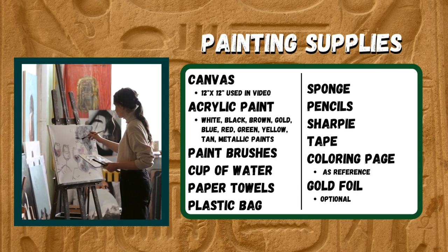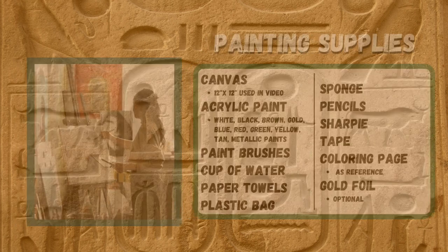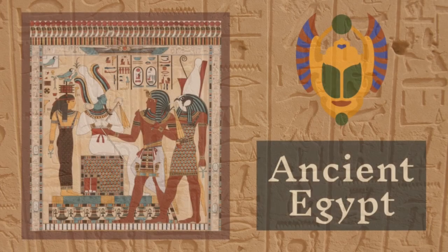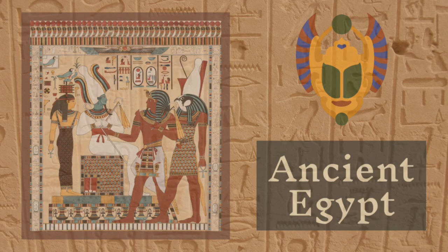Before we get started, let's learn a little bit about this month's subject inspiration from the time of ancient Egypt. The history of ancient Egypt is divided into three main periods: the Old Kingdom from about 2700 to 2200 BCE, the Middle Kingdom around 2050 to 1800 BCE, and the New Kingdom from about 1550 to 1100 BCE.